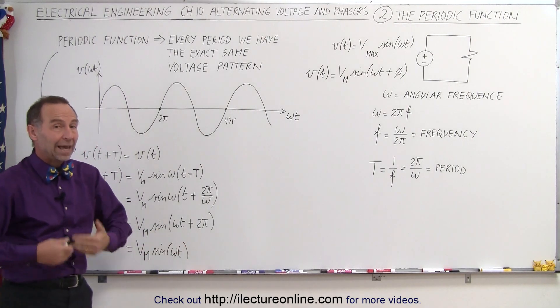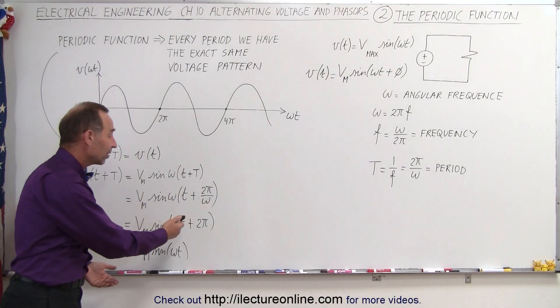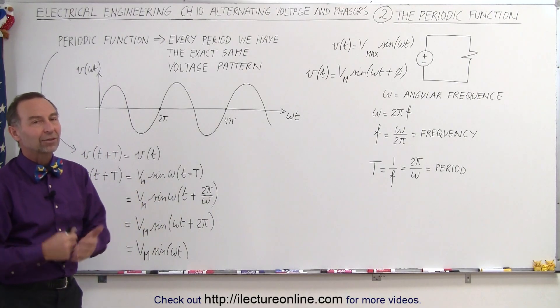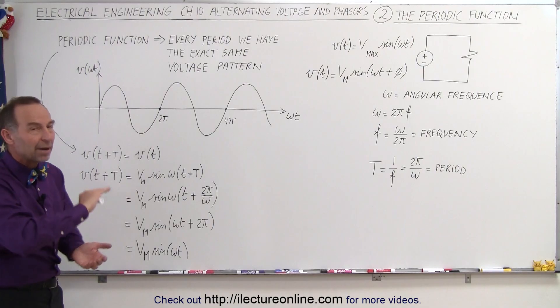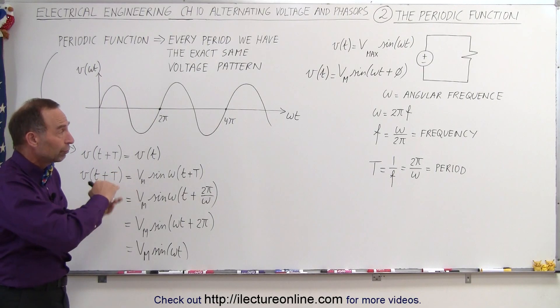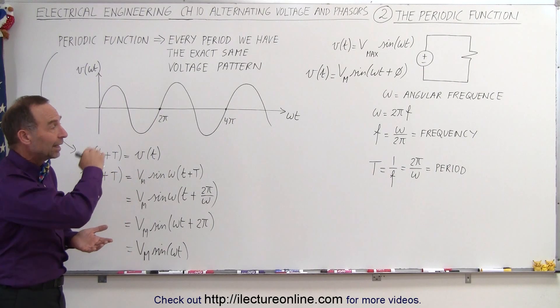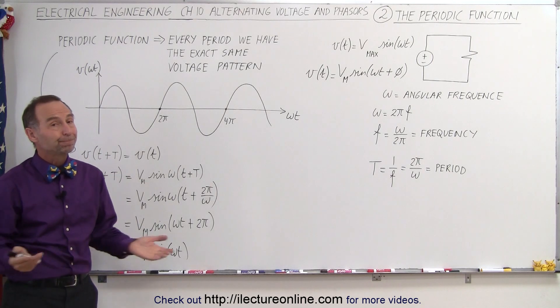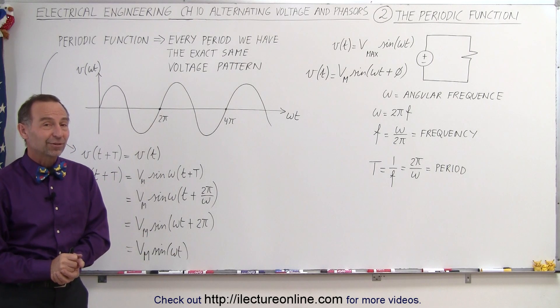Because after all, we add one period, we add a phase angle of exactly 2π, you get back to the same point. And that's what we mean by a sinusoidal function, or a sinusoidal voltage function, or current function. It repeats itself every period. That's why we call them periodic functions.